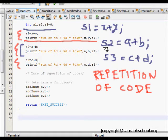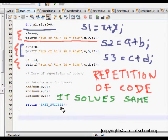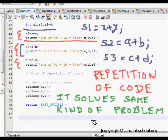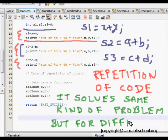So this is a perfect scenario for functions. So now we can say what is function is that it does same work or it solves same kind of problem, but for different inputs. So it solves it but for different input.